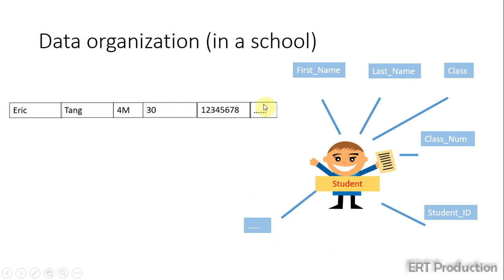As you can see here, in data organizations, we will arrange the data of a same person or same idea in a horizontal row, called record.